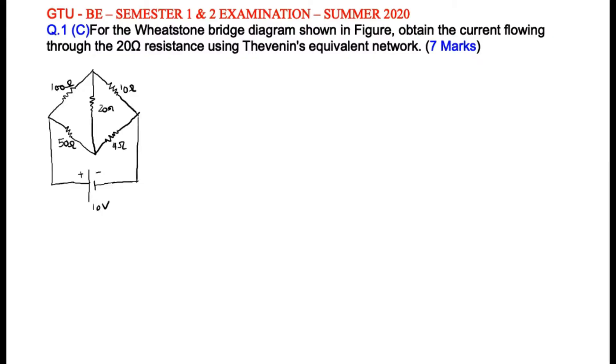Today we are going to solve the Thevenin's Equivalent Network based example that was asked in Summer 2020 examination of GTU Semester 1 and 2 for Basic Electrical Engineering. The question is, for the Wheatstone Bridge diagram shown in the figure, obtain the current flowing through the 20 ohm resistance using Thevenin's Equivalent Network. The question number is Question 1C and it was asked for 7 marks.